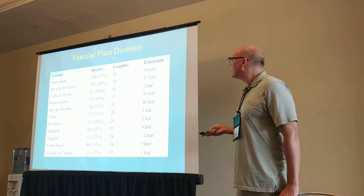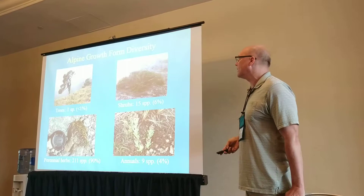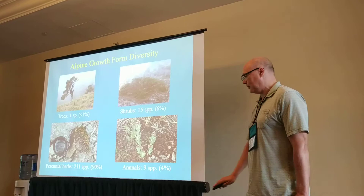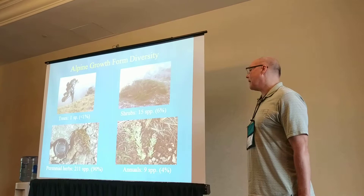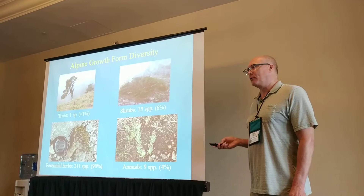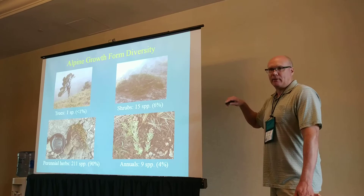Looking at growth form, as would be expected in an alpine area, there are not many trees — just one species, Pinus hartwegii, which has the distinction of being the pine that grows to the highest elevations anywhere, occurring in central Mexico up to about 4,400 meters, mostly as small individuals. There are about 15 species of shrubs and about 9 species of annuals, but what really dominates are the perennial herbs — more than 200 of the species are perennial herbs, similar to other alpine areas. The short growing season means annuals don't compete well, and it's too cold at higher levels for trees.